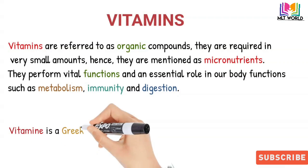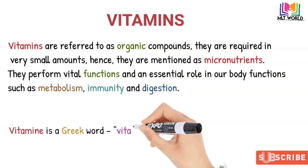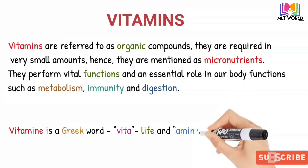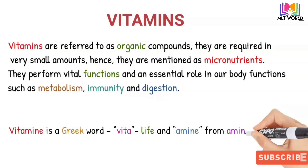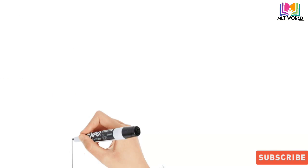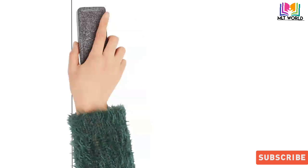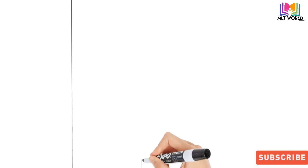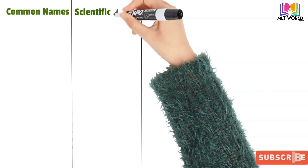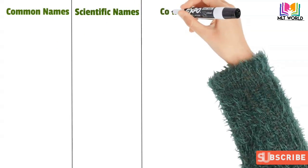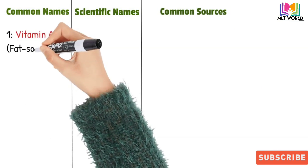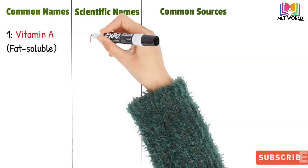Vitamins play an essential role in body functions such as metabolism, immunity, and digestion. The word 'vitamin' came from the Greek word: 'vita' meaning life, and 'amine' came from amino acids. We will now see each vitamin one by one — fat soluble and water soluble. One important point: when you eat a fat-soluble vitamin, you must also consume some fat along with it.